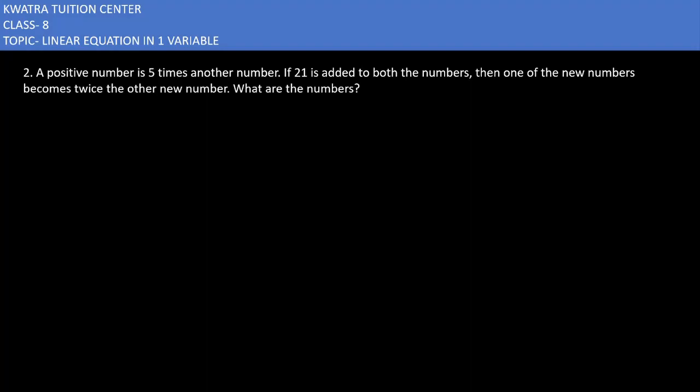Let's start with the second one. It says a positive number is five times another number. Two numbers ka relationship diya hua hai per pehli line. A positive number is five times another number. That means we have two numbers here. So let's say the first number is x.